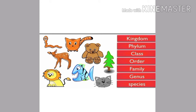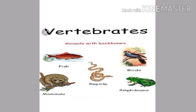At first, animals are divided into vertebrates and invertebrates. Vertebrates are animals that have a backbone or spinal column. Invertebrates are animals that do not have a spinal column. Both invertebrates and vertebrates are further divided into separate groups due to their dissimilarities. Vertebrates are divided into five classes, namely mammals, reptiles, birds, fish, and amphibians.